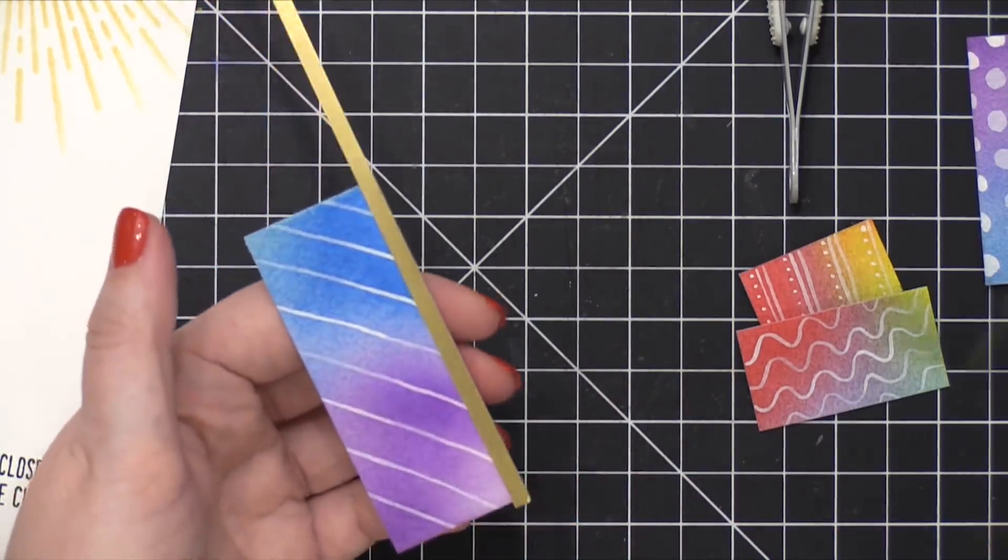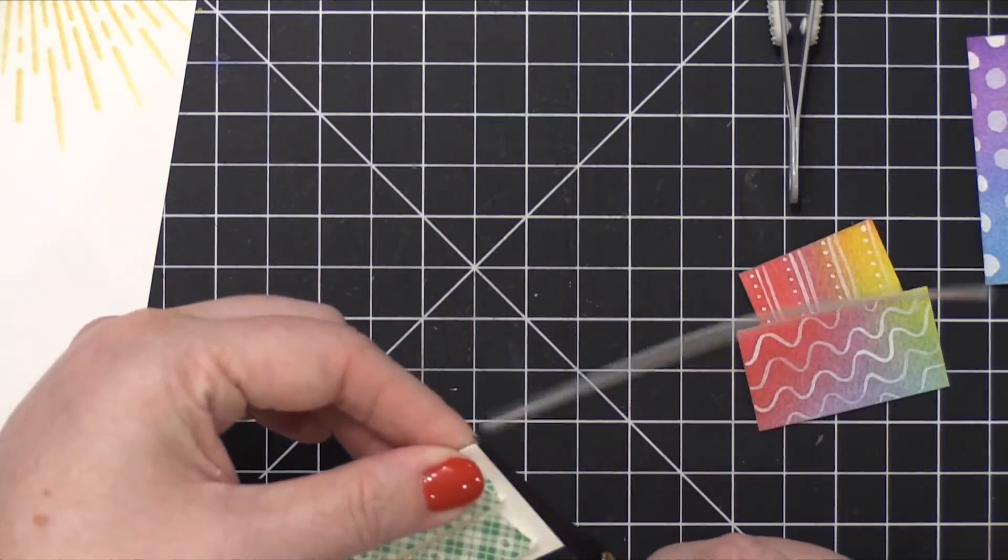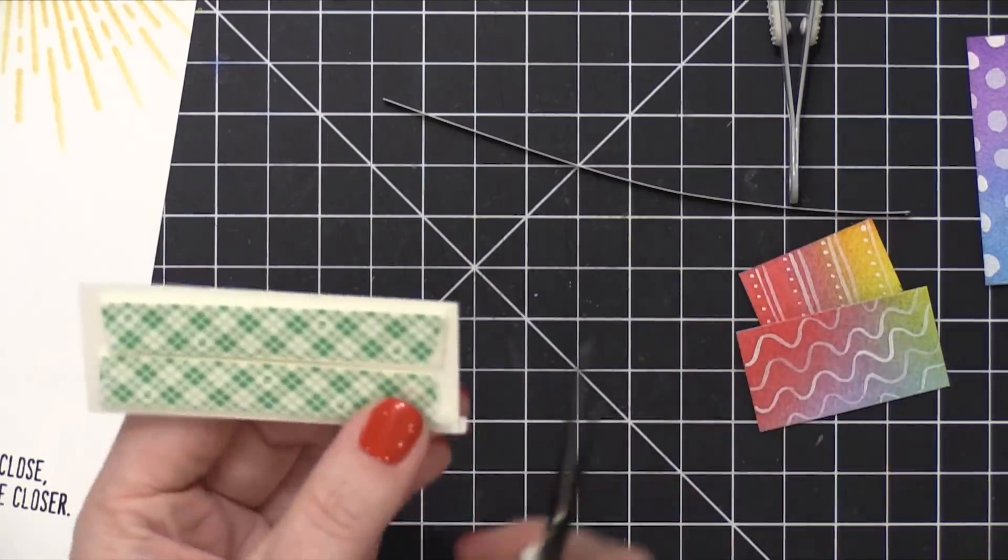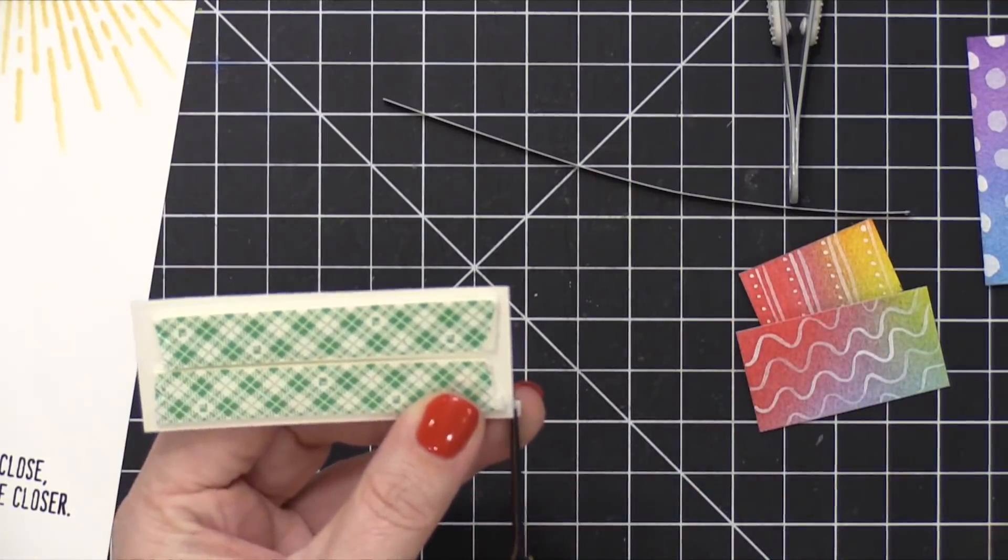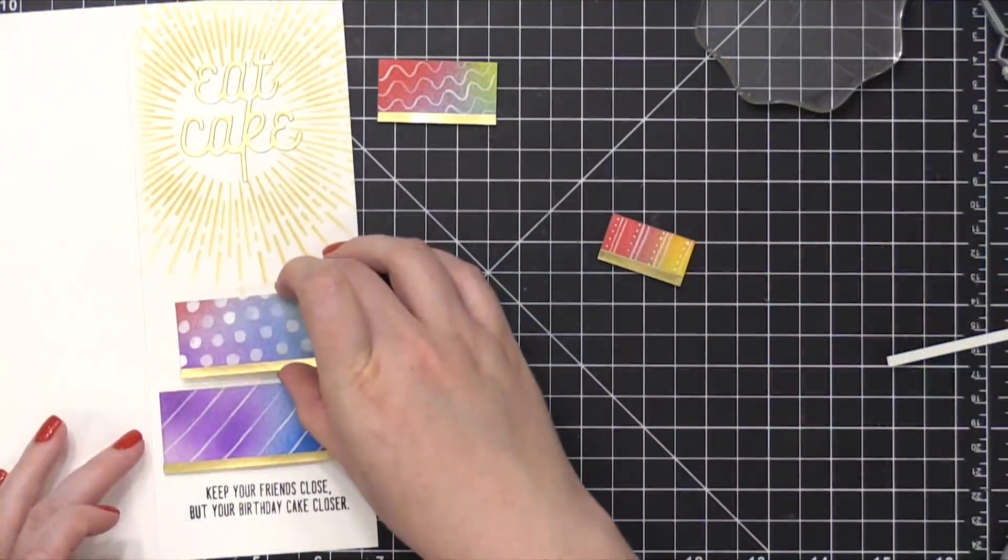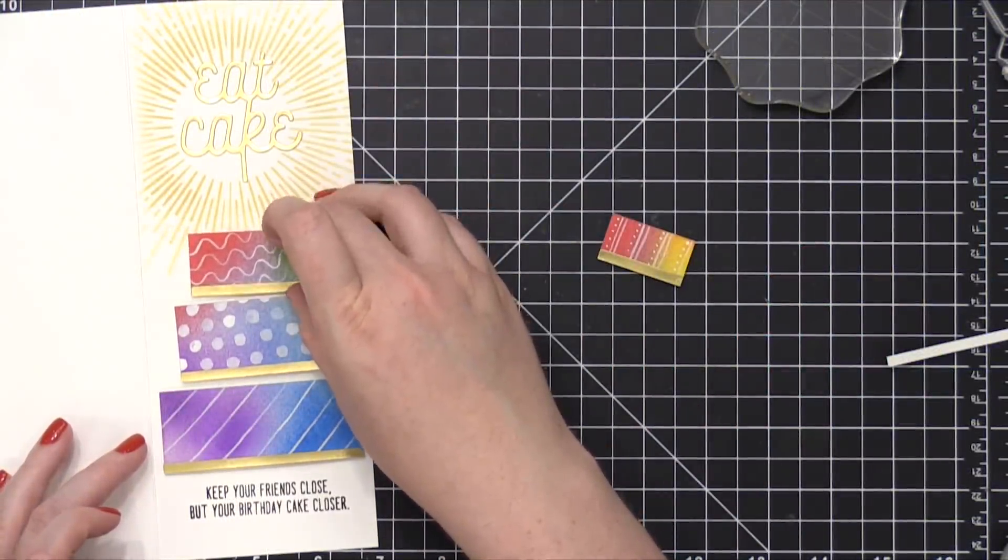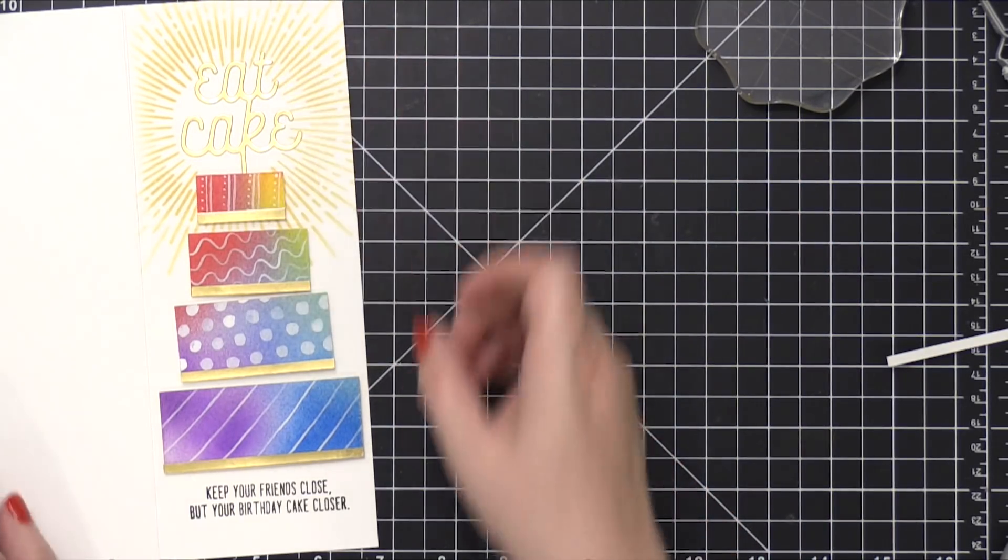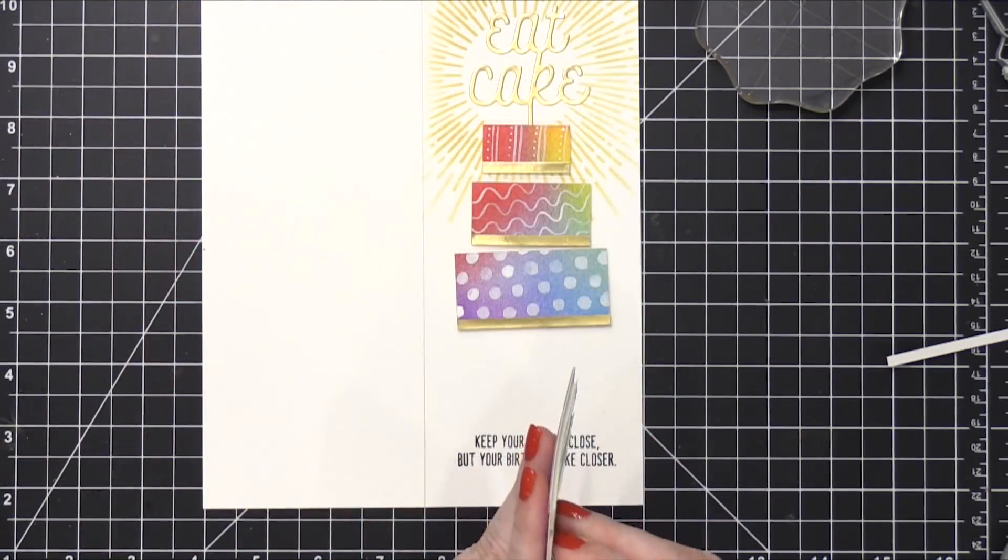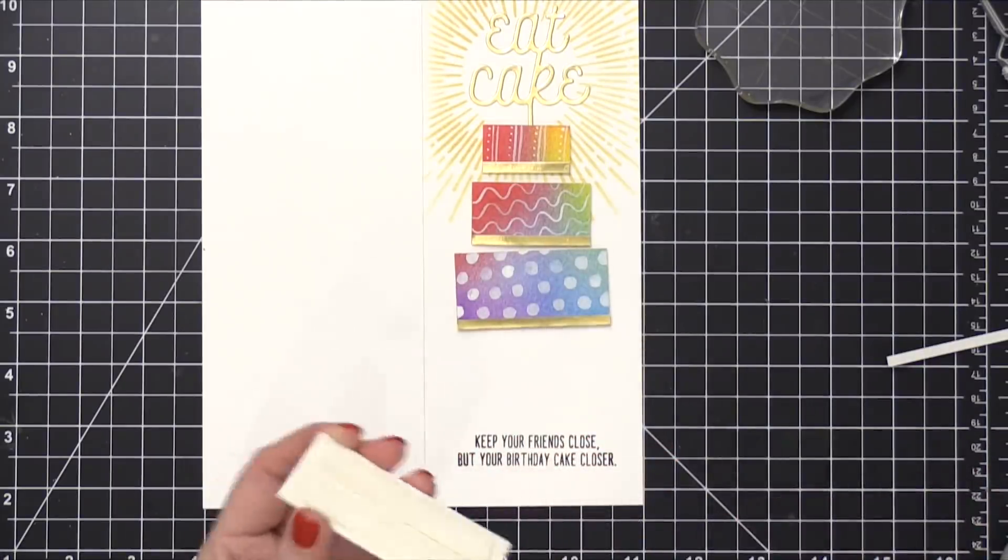And because it's a liquid adhesive, I was able to wiggle that strip around till it was in the perfect position, and then trim off the excess of each side. I did put some foam adhesive on the back of each layer of the cake. And I first placed these on the cake to make sure they had the positioning just right. And then I was able to remove the release paper on the back of each foam piece and then press the layers onto my card front.